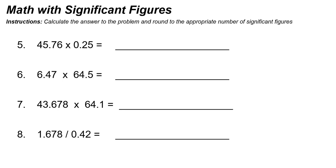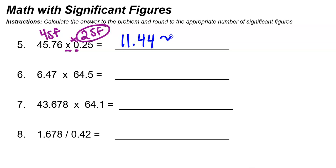Number five: 45.76 times 0.25. We're multiplying, so we look at significant figures. The first value has four significant figures, and the second has two because the leading zero is not significant. So our final answer will also have two significant figures. Multiplying 45.76 times 0.25, I get 11.44. Rounding to two significant figures, the four tells us to round down, so our final value is just 11.